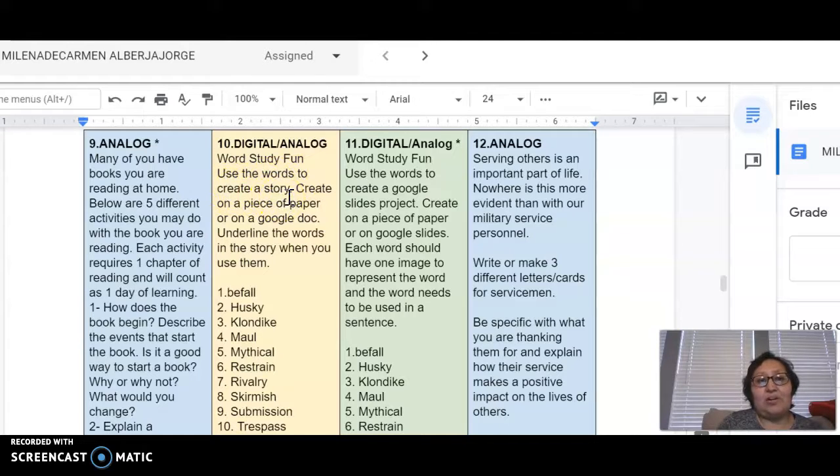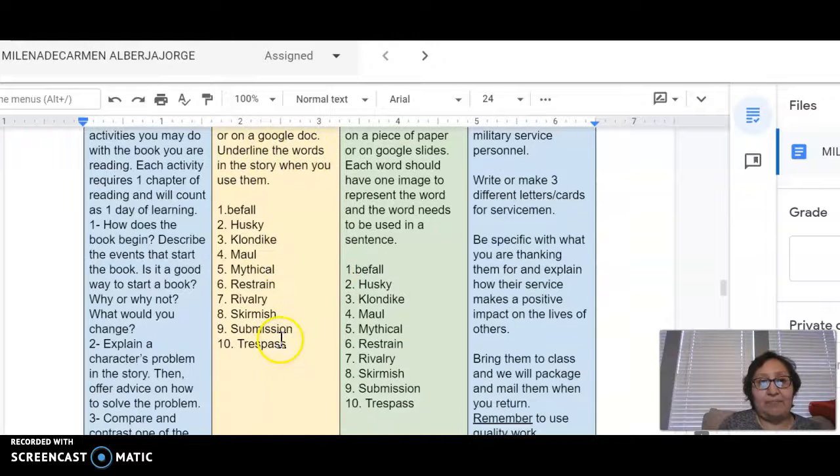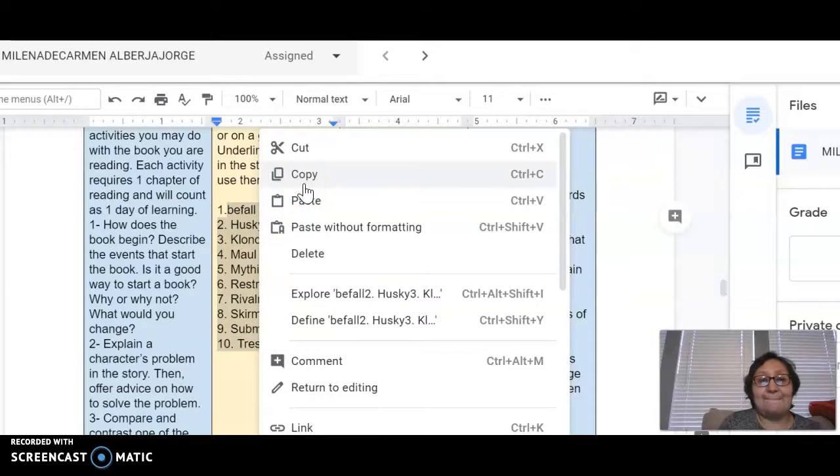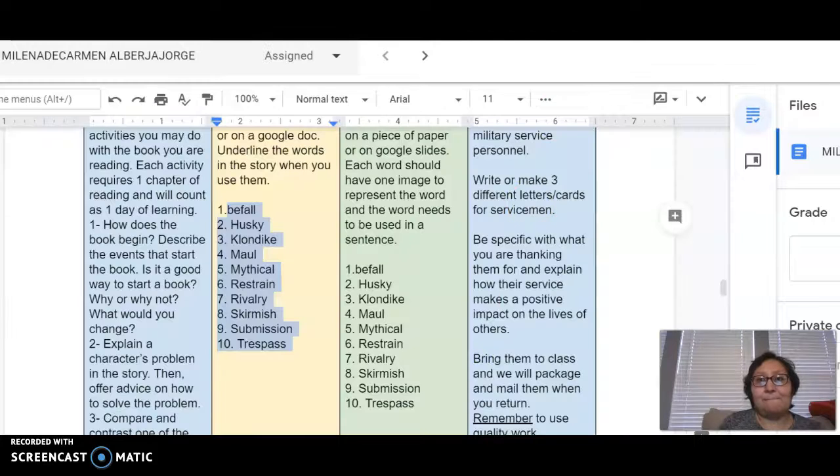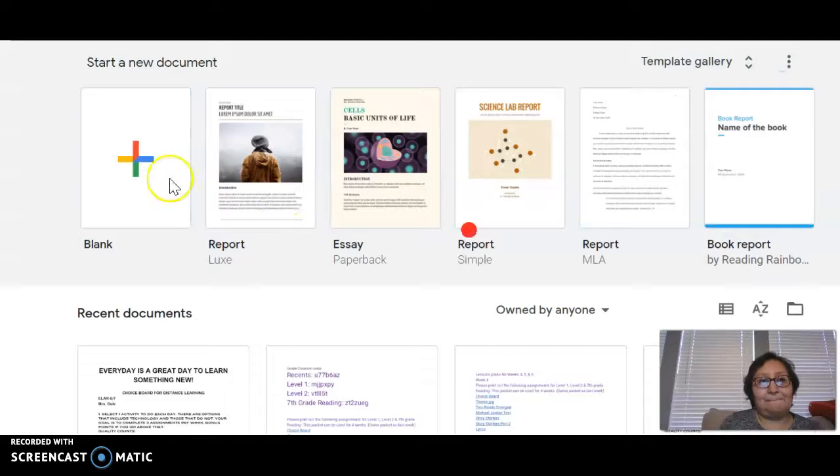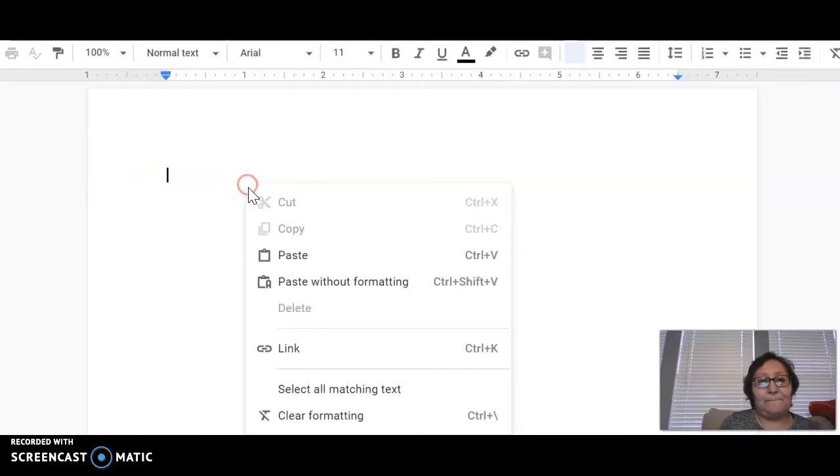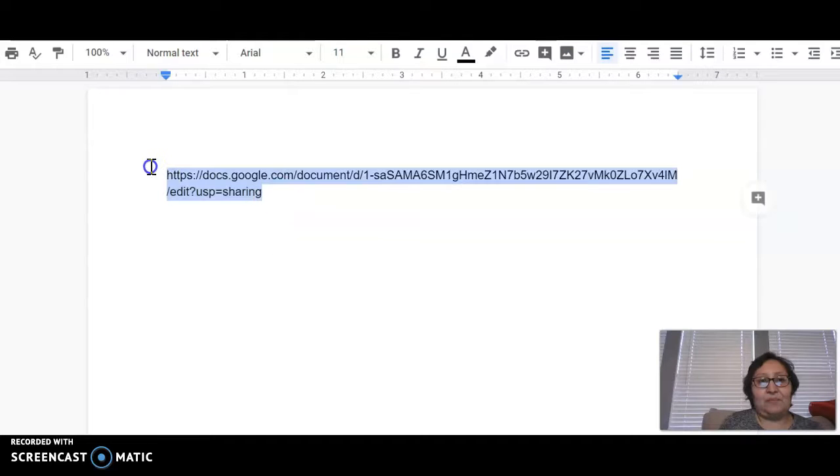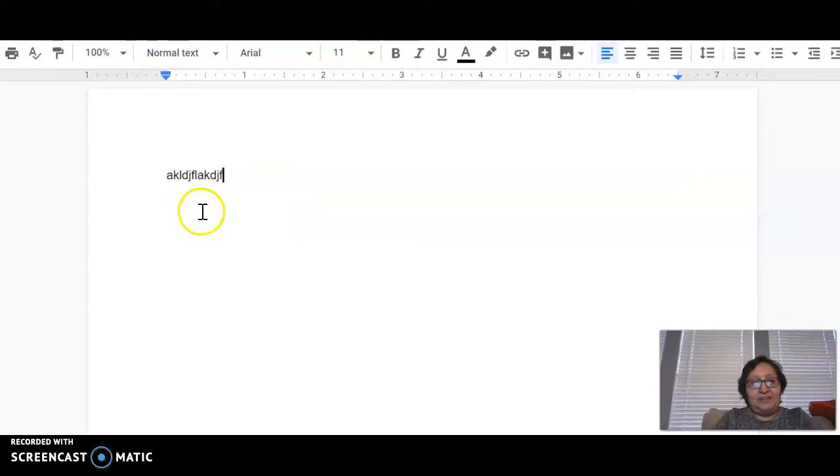So vas a hacer un cuento. Create on a piece of paper or on a Google Doc. So tienes que hacer el trabajo en la forma de Google Doc o en una hoja de papel. Estas son las 10 palabras que vas a usar en tu cuento. These are the 10 words you're going to use in your assignment. So tengo que ir a Google Docs y voy a escribir mi cuento aquí con las 10 palabras que necesito.